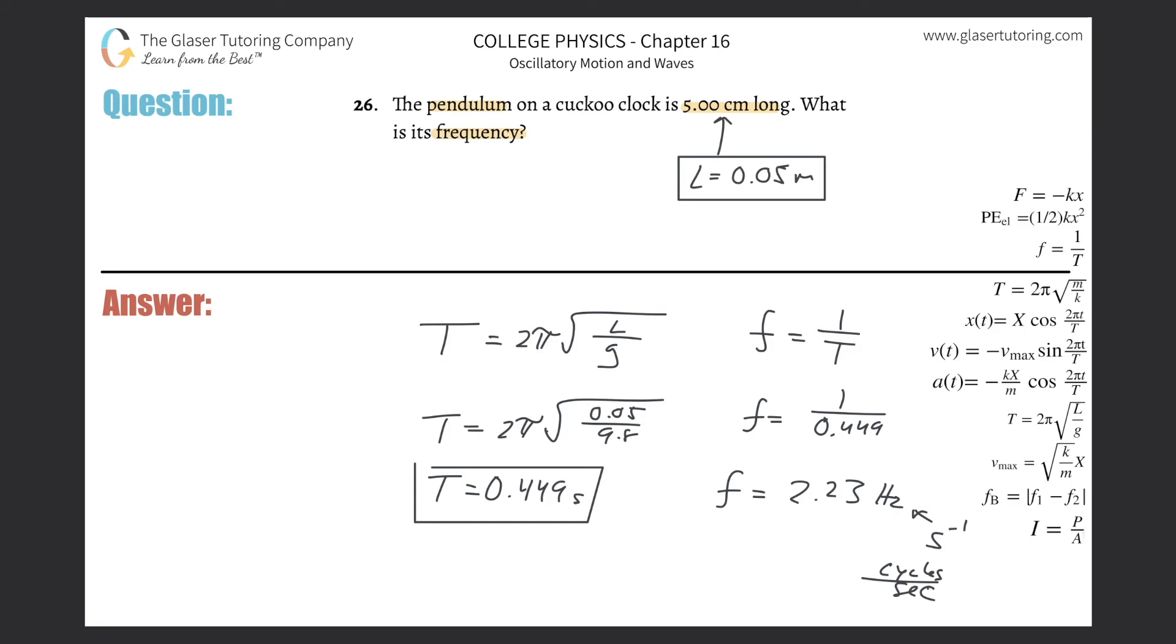You can also reinterpret Hertz as cycles per second. That all means the same thing. Cycles per second has richer detail than just per second—it specifies what per second. Cycles, oscillations, swings, whatever you want to call it.